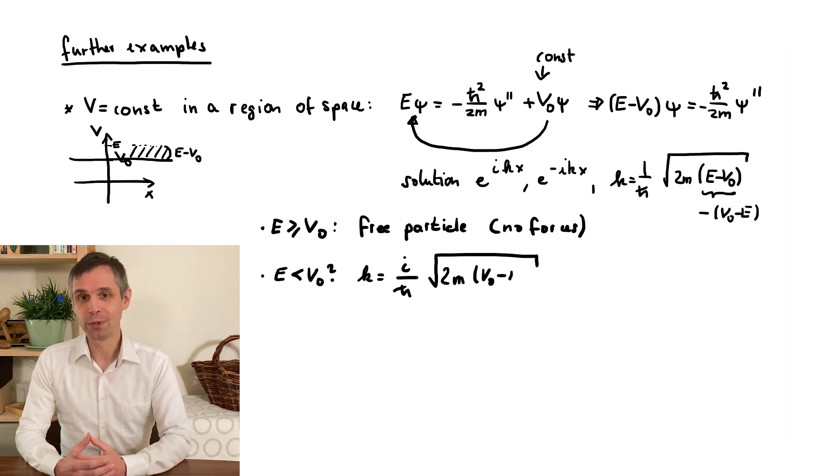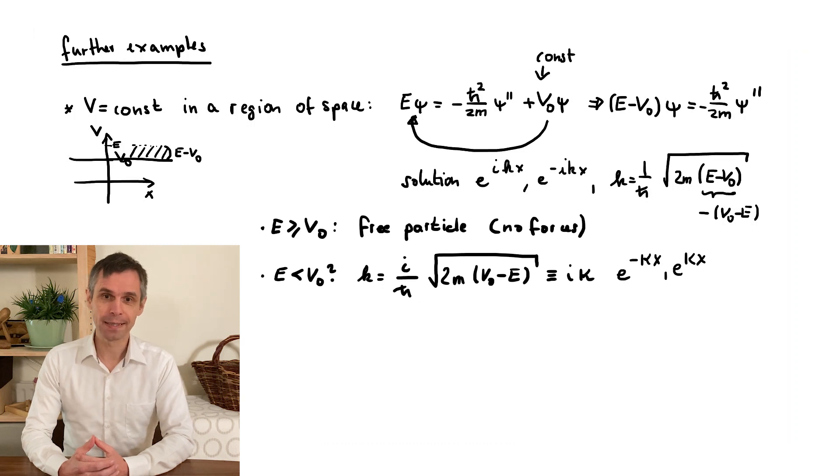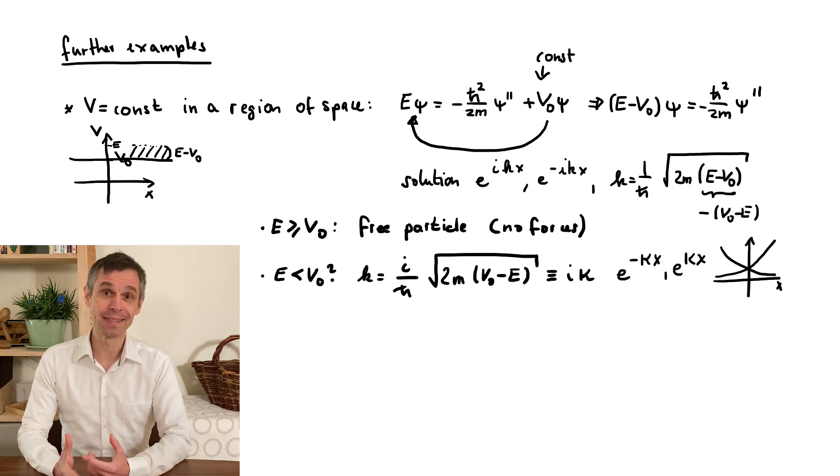We introduce a new real coefficient kappa here to keep working with real quantities. And when we use this to rewrite our solutions, we see that they become ordinary real exponential functions, which no longer oscillate but increase or decrease depending on the sign in the exponent.